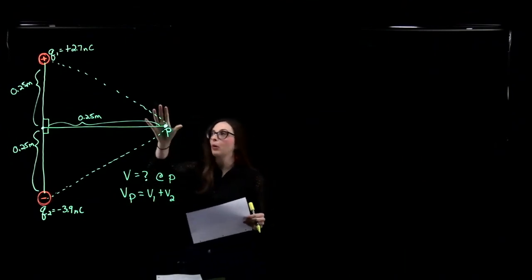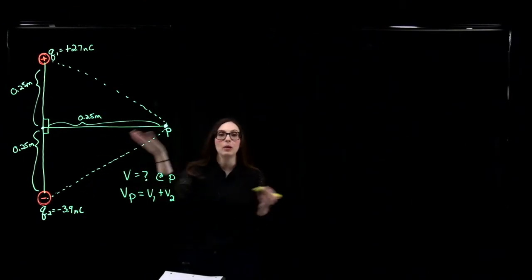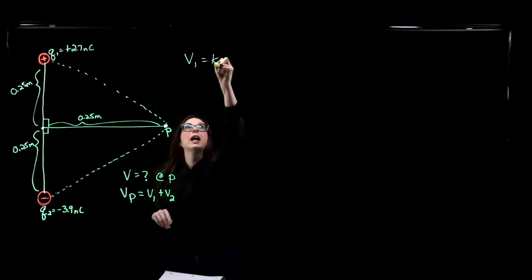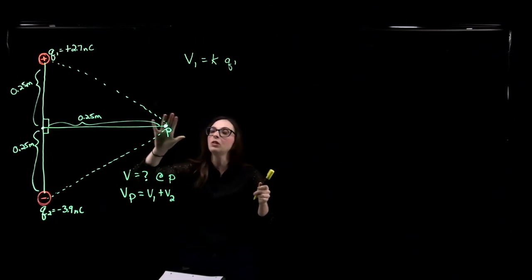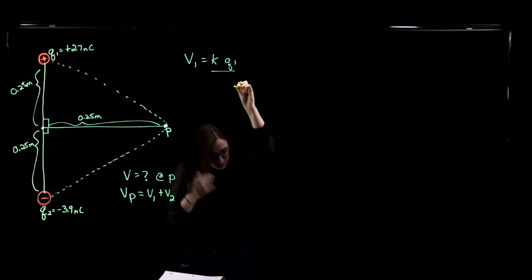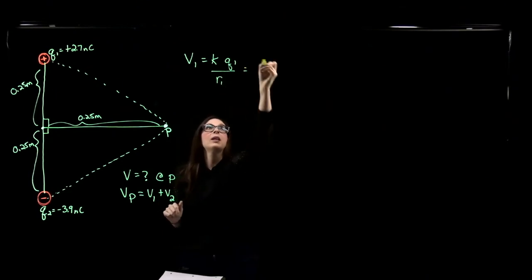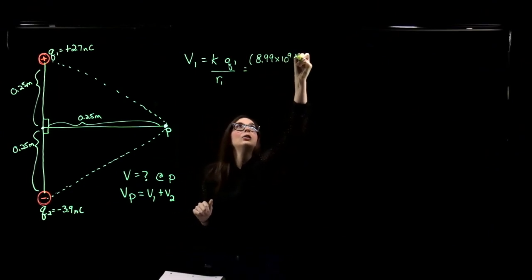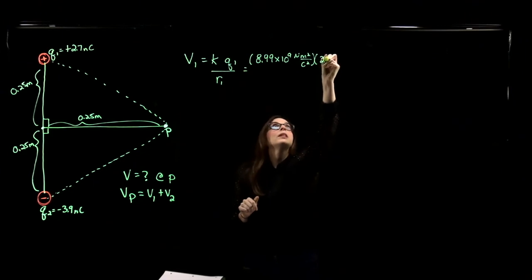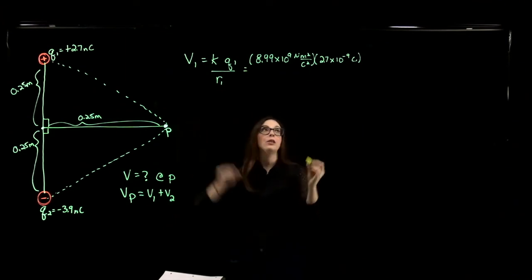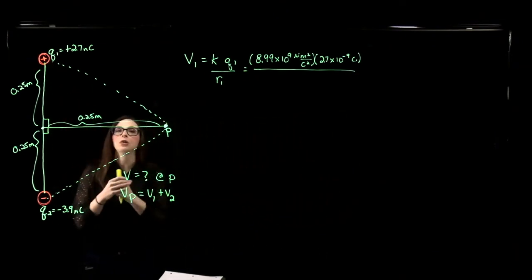To find the electric potential at point P due to Q1 and Q2, we use the equation: electric potential equals K times Q over R, where R is the distance between the charge and the point. For charge 1, that's 8.99 times 10 to the 9 newton meters squared per coulomb squared, times Q1 which is 2.7 times 10 to the minus 9 coulombs. A nanocoulomb is times 10 to the minus 9 coulombs. Now we divide by the distance between point P and the charge.